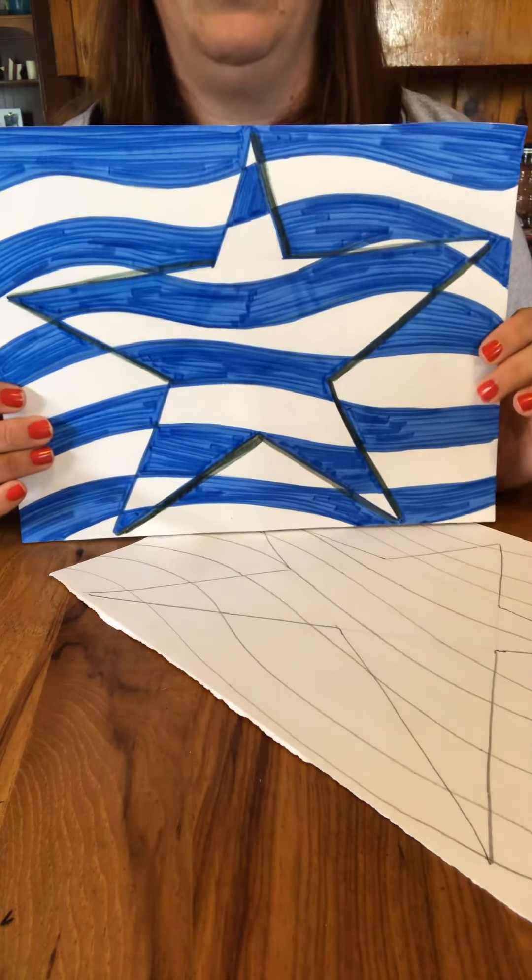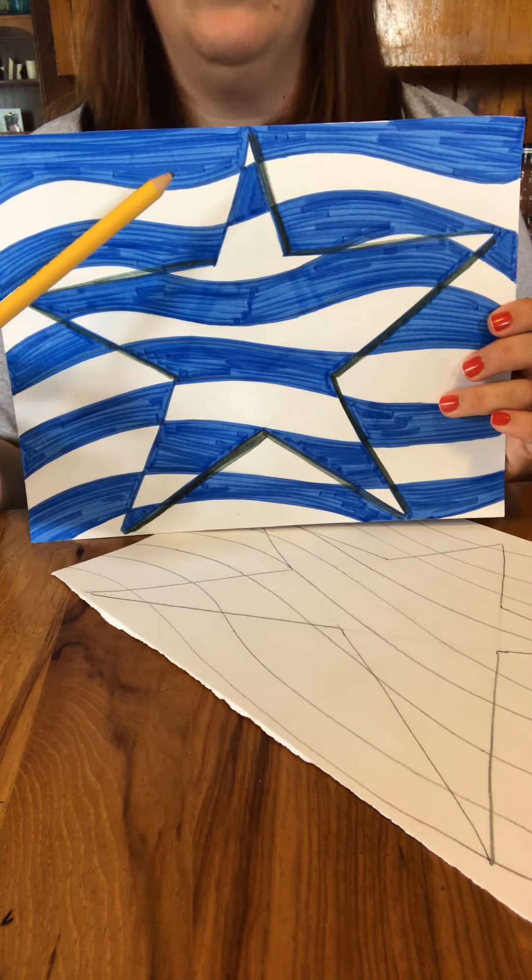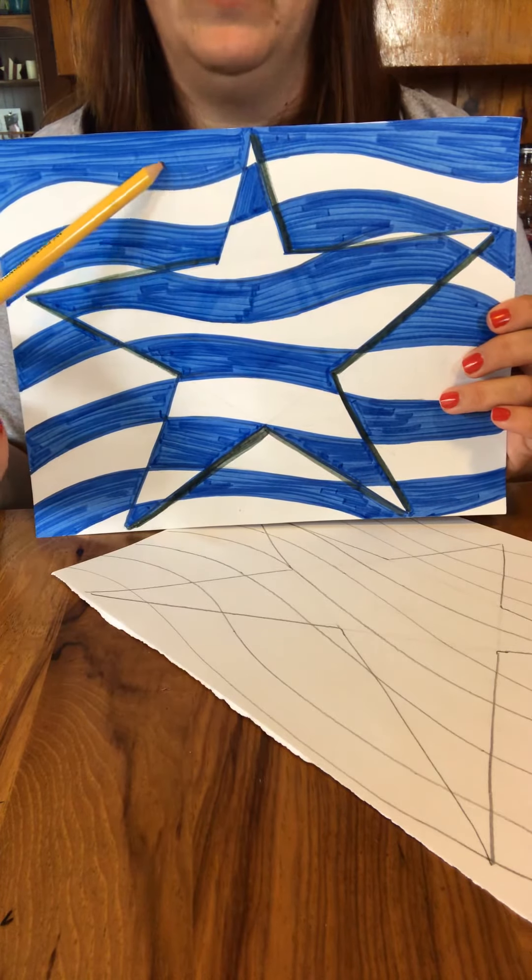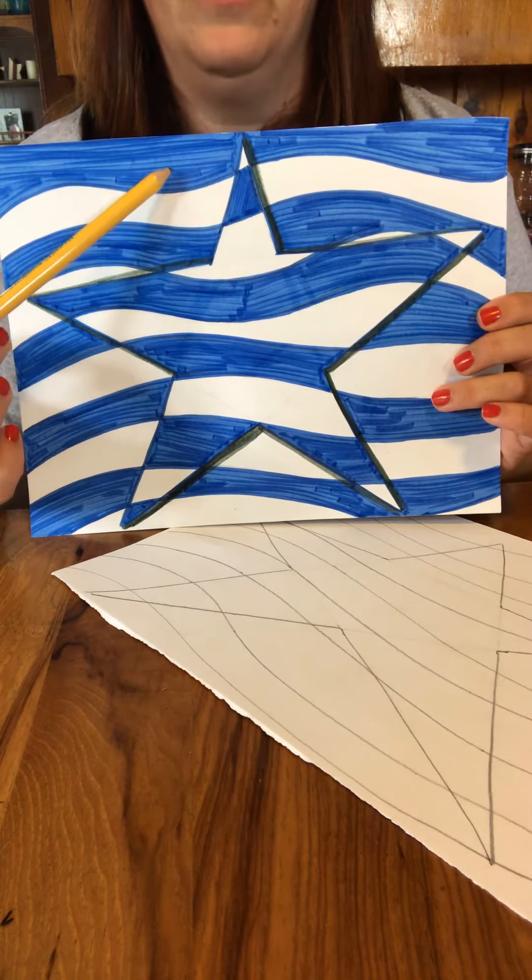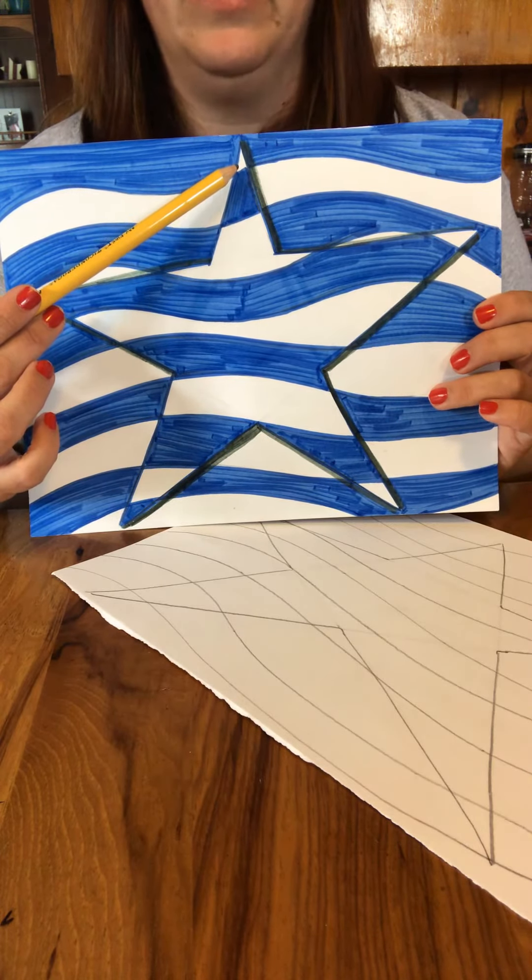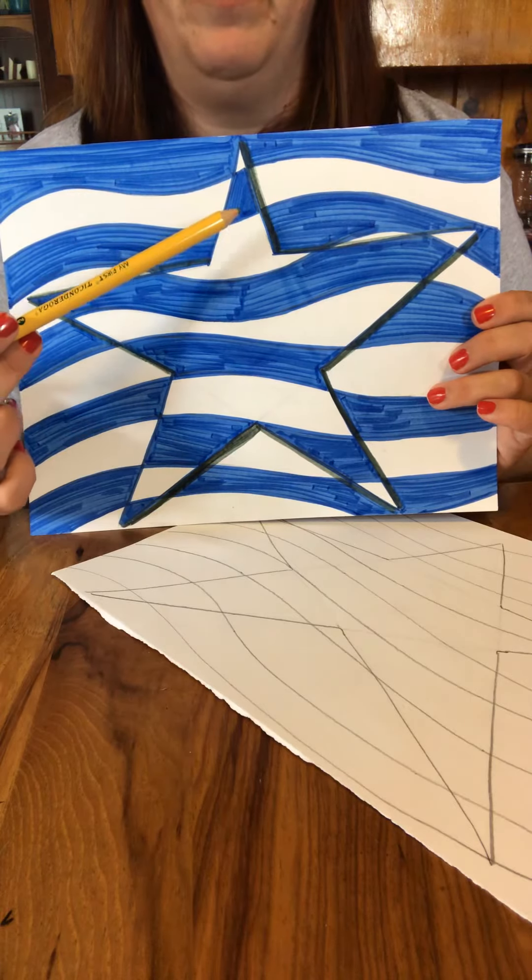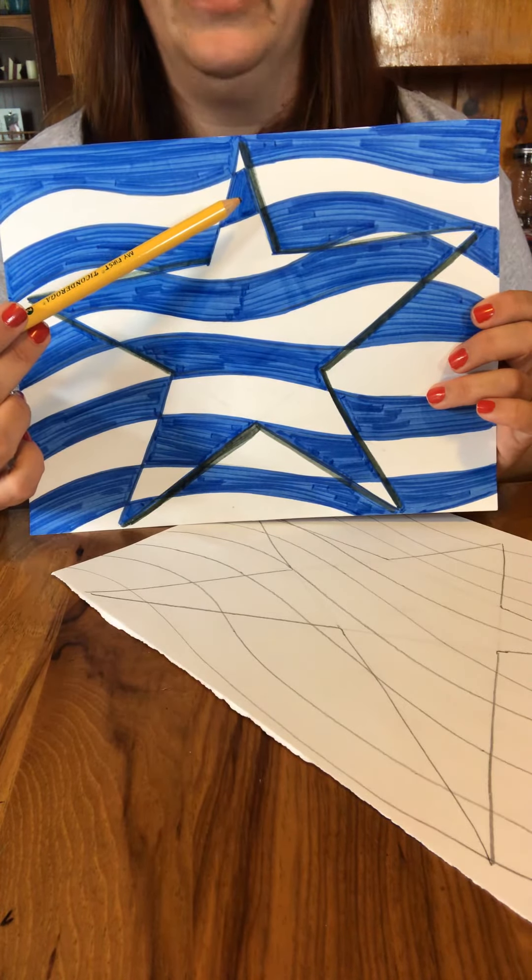So here's my finished one. So you're going to color every other one. So if you see at the top the stripe I did blue but where it was in the star that's white. The next line down is my white stripe but inside the star it's blue.